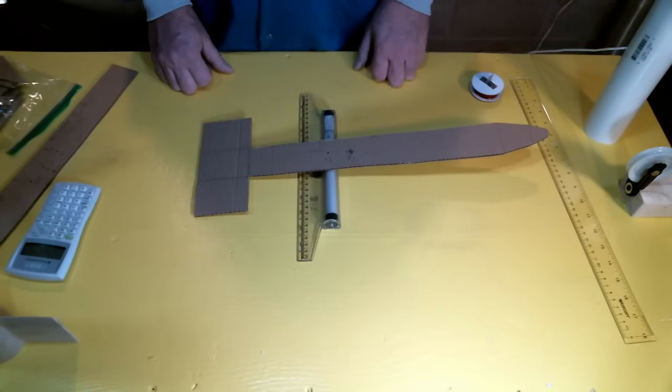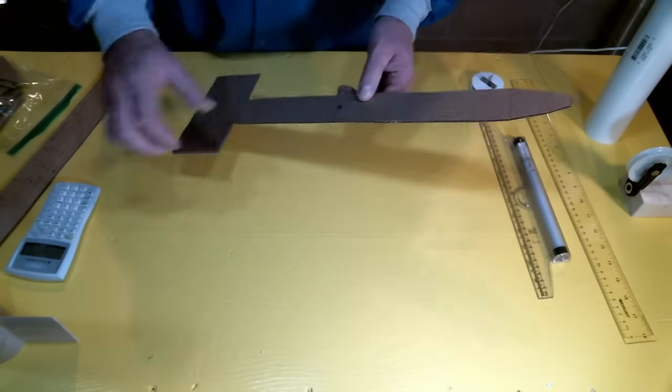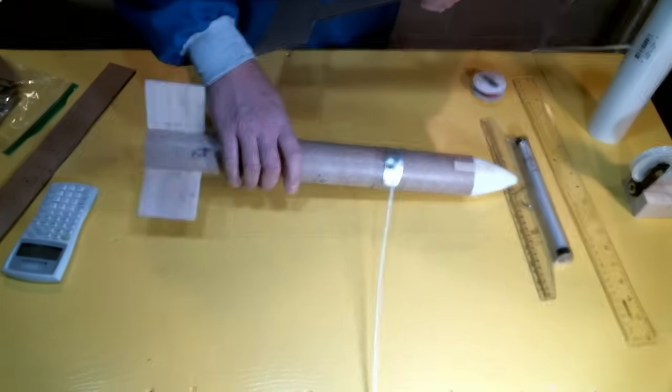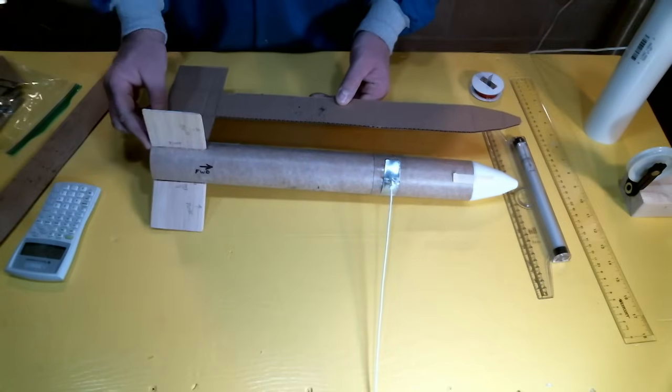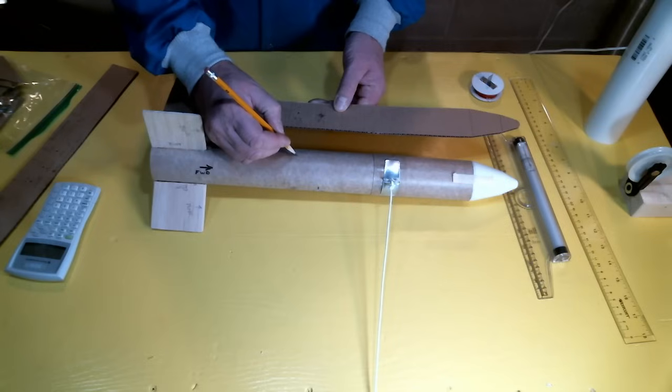So, now what I want to do is transfer the center of pressure location from the shadow model onto my actual test article. So, I'll do that very simply by placing my shadow model next to the model rocket, and transfer the center of pressure location onto the model.